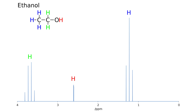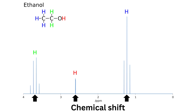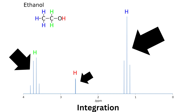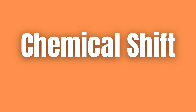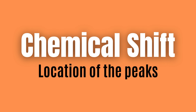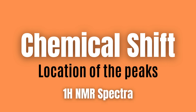When interpreting an NMR spectrum you want to consider three things: chemical shift, or where the peaks are located on the x-axis; integration, or the height of the peaks; and splitting, which has to do with the number of peaks in one cluster. This video explains chemical shift in greater detail. For simplicity, we will only consider proton NMR spectra.